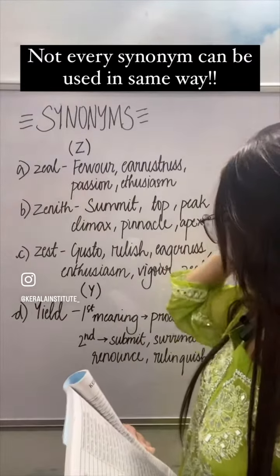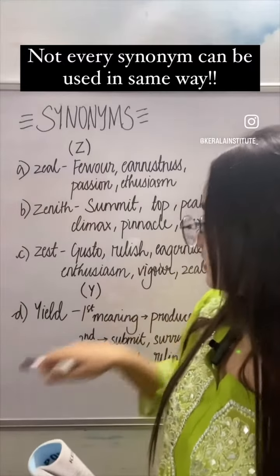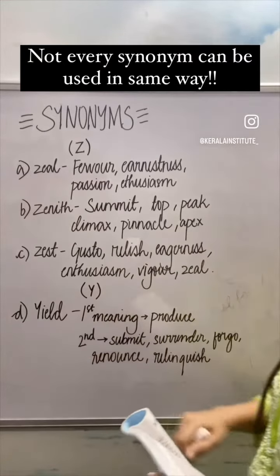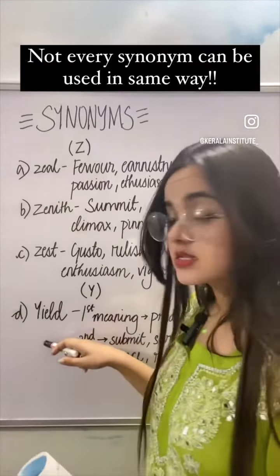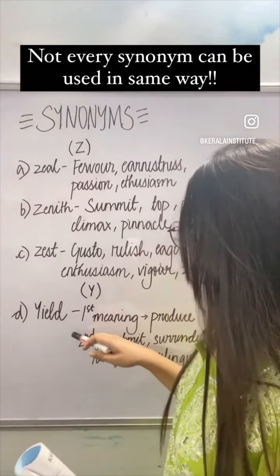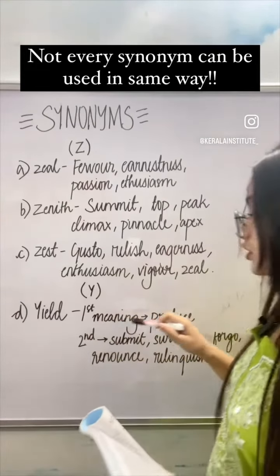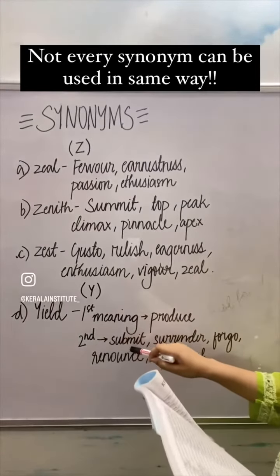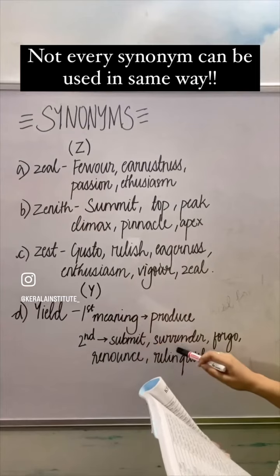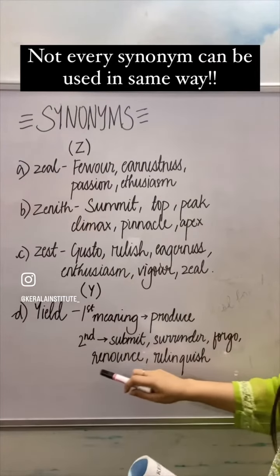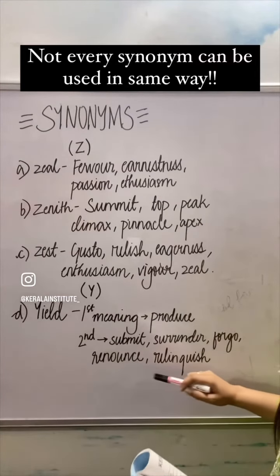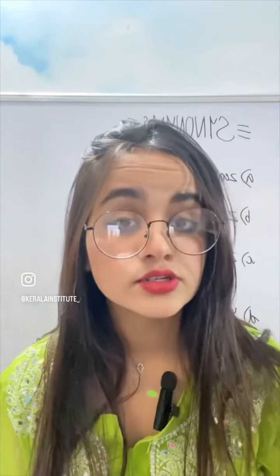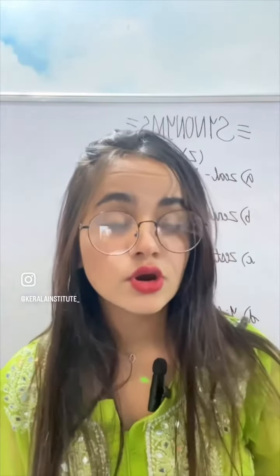Now we move on to the next alphabet: Y. The word is yield. Yield has two meanings — the first is to produce, and the second means to submit, surrender, forego, renounce, and relinquish.